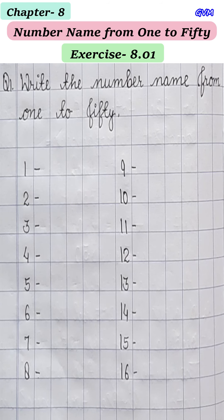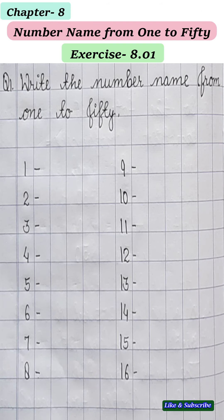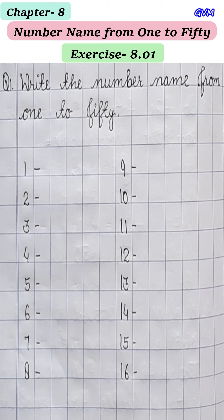Hello students, today we are going to start lesson 8 and the name of the lesson is number names from 1 to 50. In this lesson, we will write number names from 1 to 50 and then we will solve some related exercises. So we will start our first exercise 8.01 and the question is: write the number name from 1 to 50. आपको कहा गया है कि number name लिखिए 1 से 50 तक। Start करते हैं।